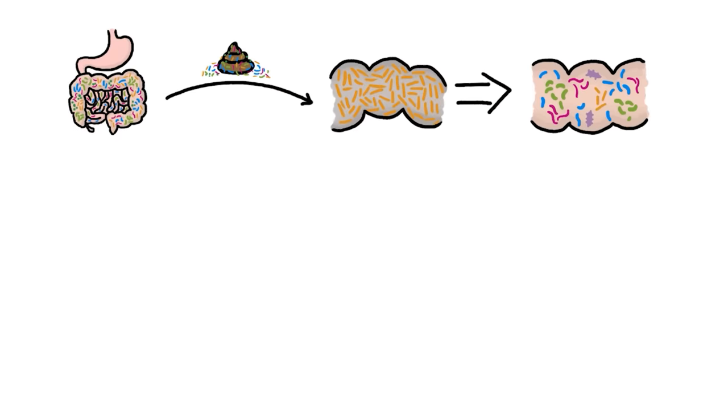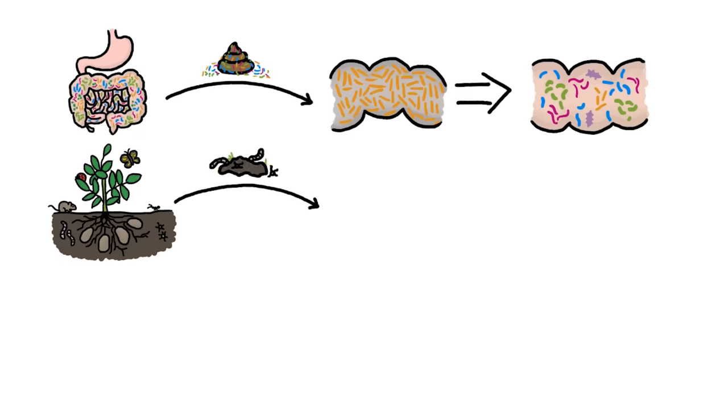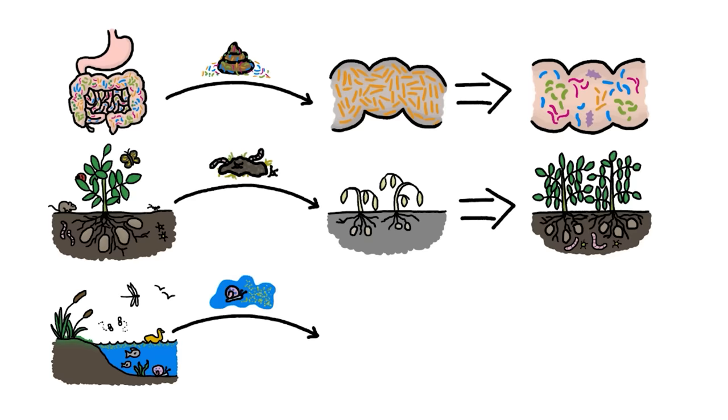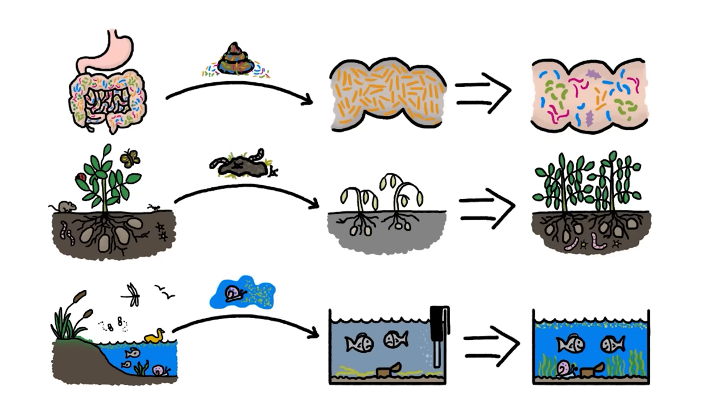The human gut isn't the only ecosystem where this germ of an idea is taking hold, either. For example, transplanting soil from healthy fields to unhealthy ones helps knock back crop diseases and make soils more fertile, and transplanting water, snails, and duckweed from a pond to an aquarium helps maintain a well-balanced fish tank.